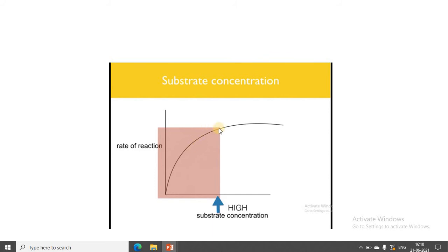This continues until it reaches a point known as Vmax. Beyond Vmax, if you further increase the concentration of substrate, it does not have any effect. No matter how much you keep increasing the concentration, there is no change in enzyme activity — enzyme activity remains the same.